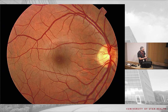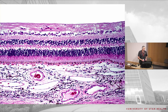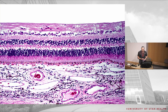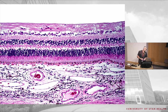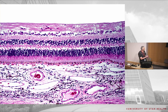The retina has layers — what do retinas, ogres, and onions have in common? Layers. As a pathologist I look at the retina with the vitreous on top and the choroid on the bottom. We'll go through the layers starting from the vitreous: internal limiting membrane, nerve fiber layer, ganglion cell layer, inner plexiform, inner nuclear layer, outer plexiform, outer nuclear layer, photoreceptors, and RPE.